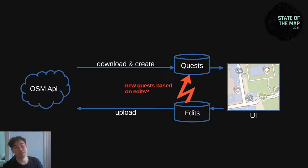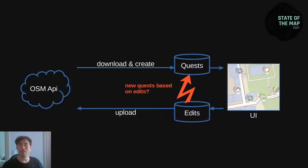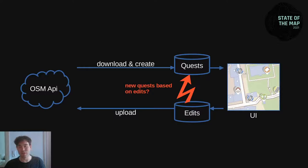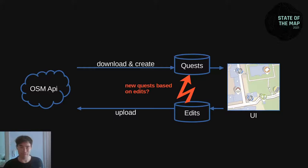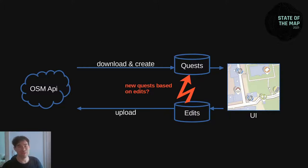The problem here is that there's no real live editing. Maybe you already changed data by answering certain quests, but it's not reflected — the quests are not updated. For example, house numbers for buildings are only asked for certain building types, like apartment buildings or detached houses, but not for garages. So before you answer the building type quest, the house number quest will not appear. And after you answer it, with this architecture you still don't get the quest, because you first need to upload the change and then download it. Then you see the quest.